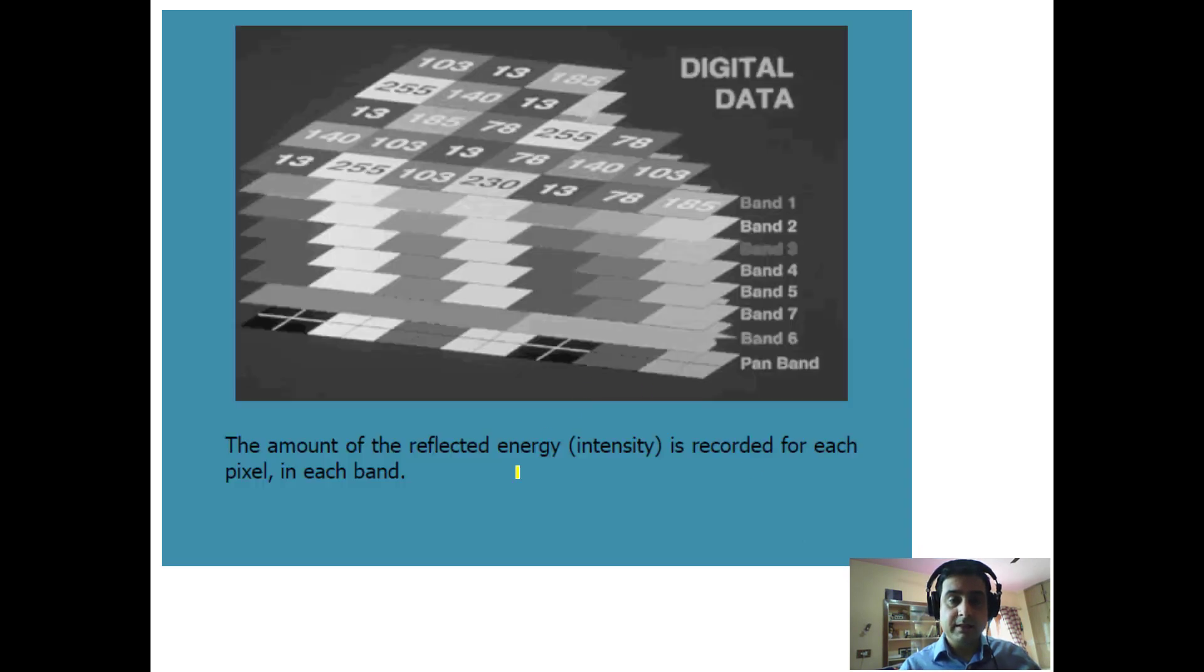The satellite image can be viewed in different bands - band 1, band 2, band 3 - depending upon the sensor characteristics and the range of wavelengths in which the image is recorded. When these bands are stacked over one another, they form a composite image.